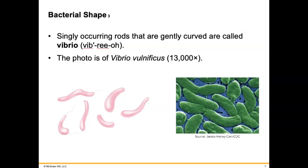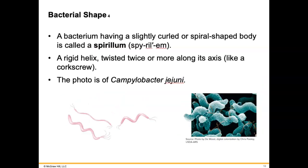There are also bacteria that are gently curved, and they're called Vibrio. The ones I'm most aware of live in the water and can make you sick, so we never want to get Vibrio. Another bacterial shape is Spirillum — it is spiral-shaped with a rigid helix twisted twice or more along its axis, like a corkscrew. The picture shown here is Campylobacter jejuni.